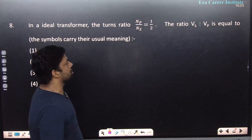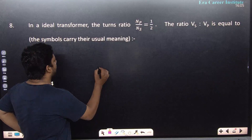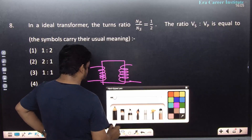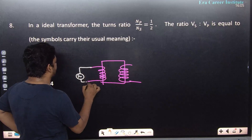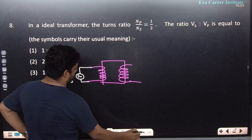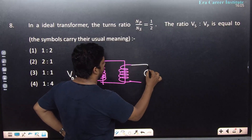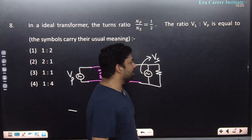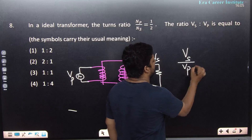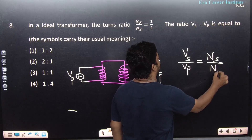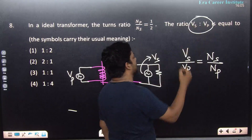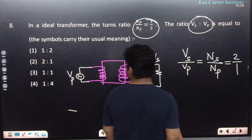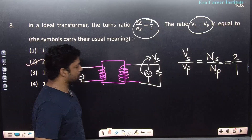Question 8 is very simple — about transformers. For a transformer: Vs/Vp = Ns/Np. Primary coils, secondary coils, supply voltage on primary side, load on secondary side. They asked for Vs/Vp — writing it in reverse gives the ratio as 2:1.